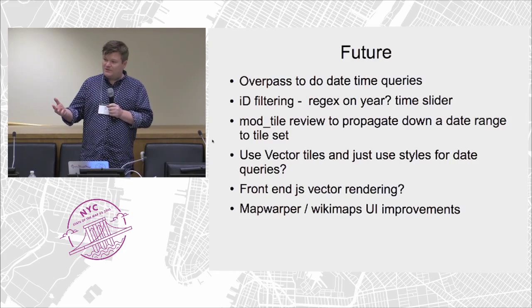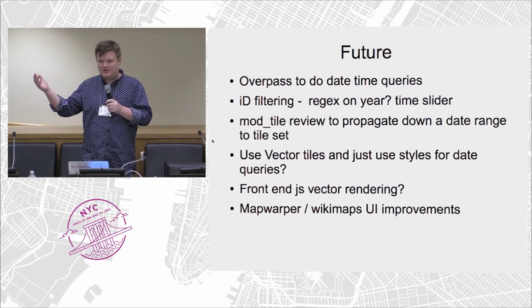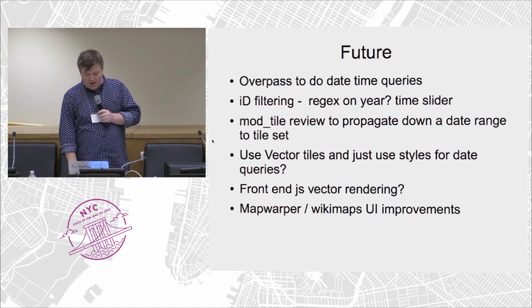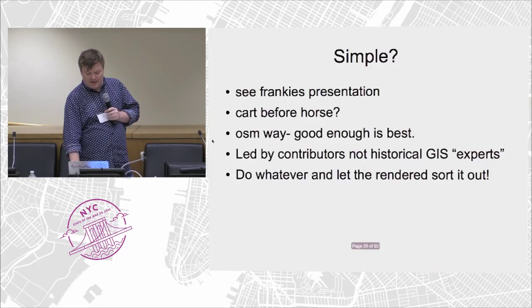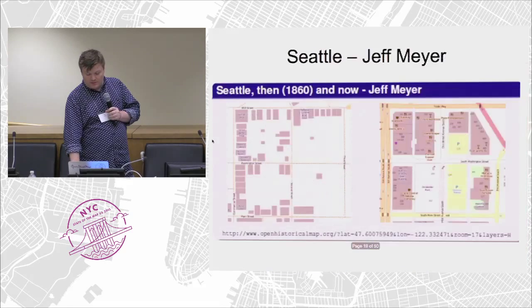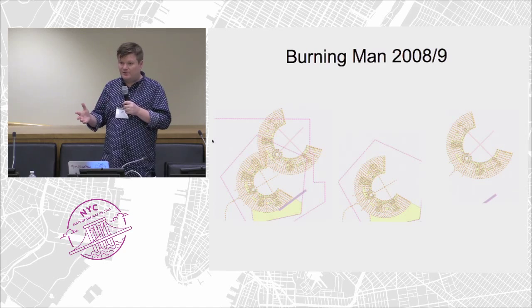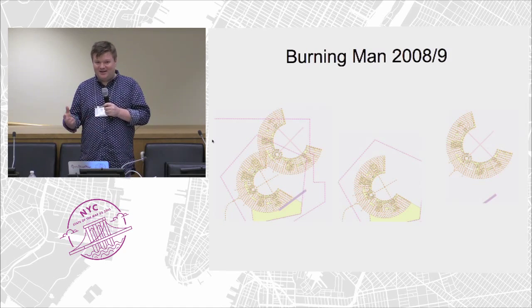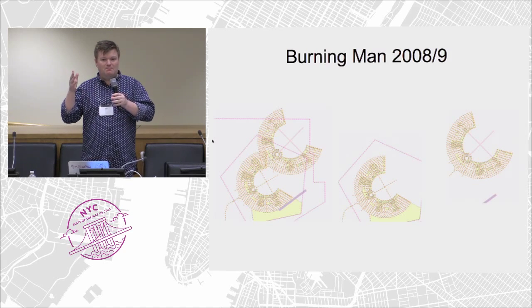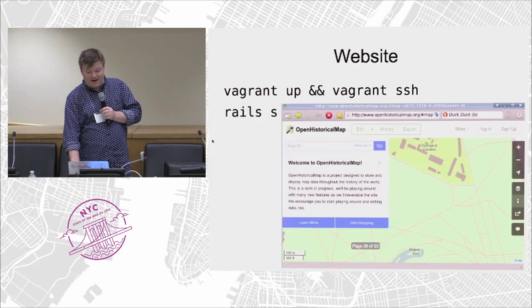Some future things: we've got Overpass for queries, which may be a way of having an API into the database — you should be able to query all buildings with a given name between years 1800 to 1850, for example. We've got three tile sets live on OHM at the moment: one showing everything, one showing 2008, and one showing 2009. It's possible to do date range tile sets for a specific year or between two years, but we can't do it for everything because we'd run out of disk space.